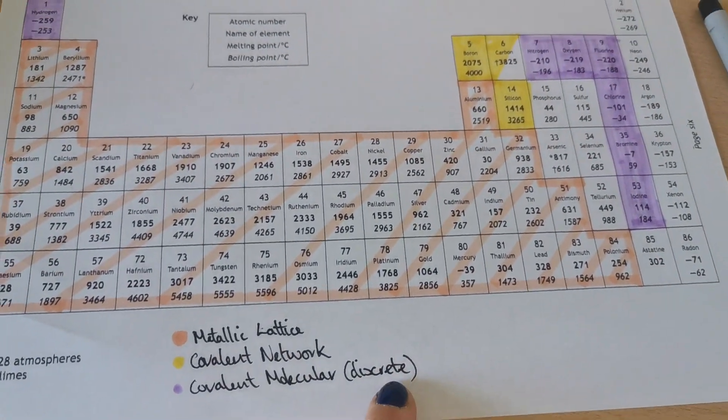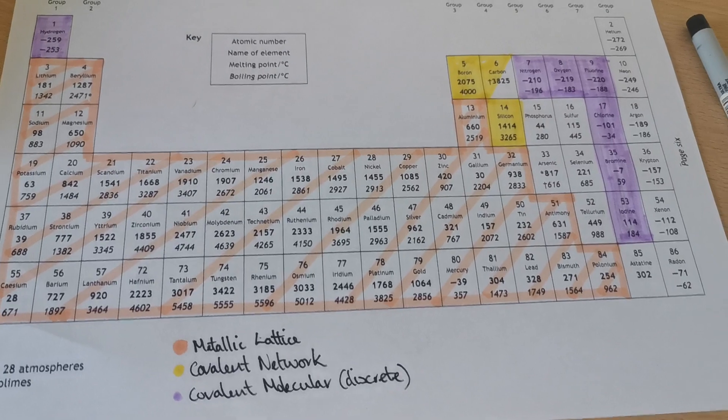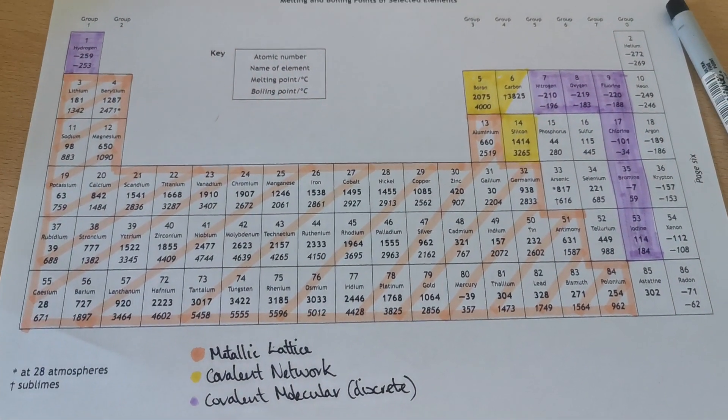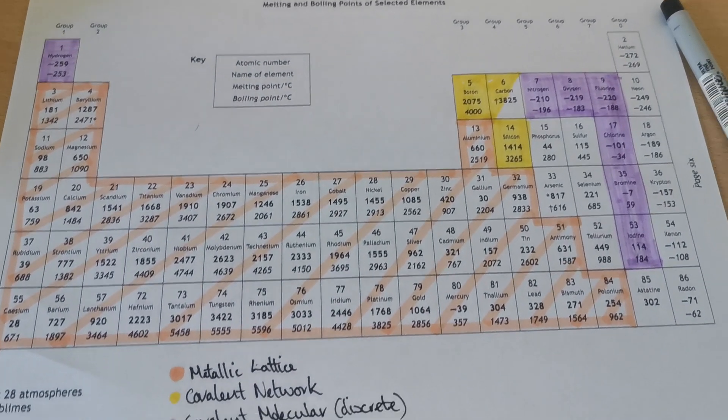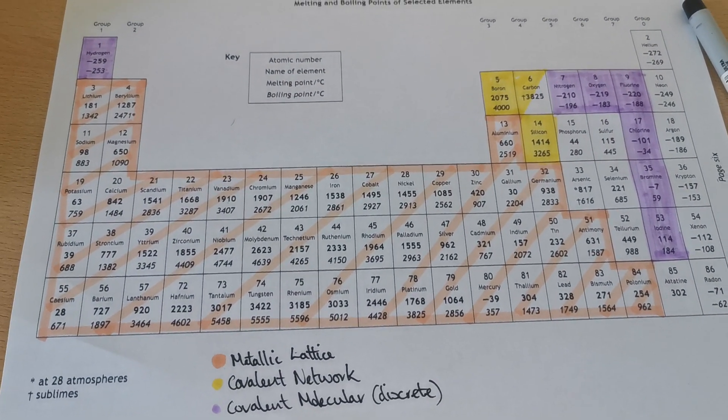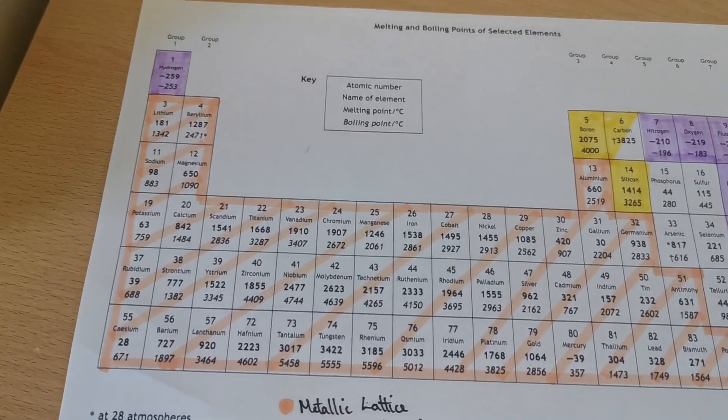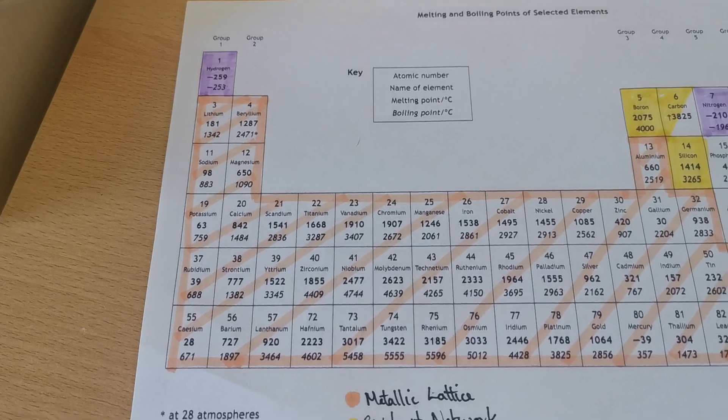This word here, discrete, you'll see that sometimes it just means small. The structure of these elements could be described as a discrete covalent molecular structure. However, there are some other elements that do exist as discrete covalent molecules. They are not diatomic, however, they are bigger than that.